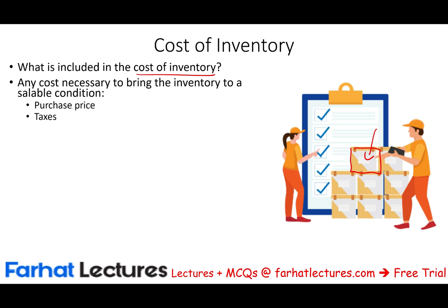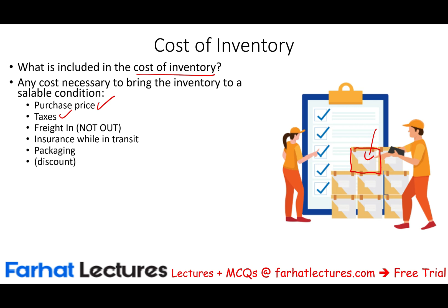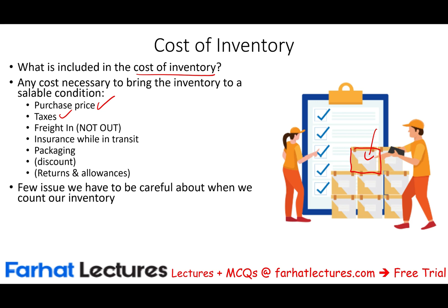What kinds of costs are included? Obviously the biggest one is usually the purchase price. If you have to pay any taxes, freight in — not out, freight in, as we talked about in the prior session — insurance, packaging, minus any discounts, minus any returns and allowances. We discussed all these issues earlier, and we also discussed FOB shipping and FOB destination.